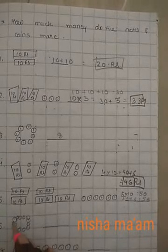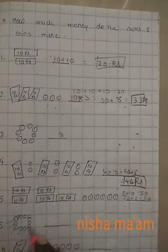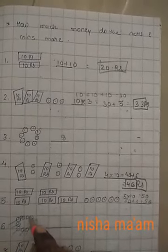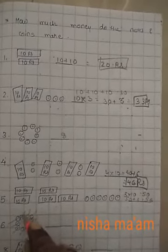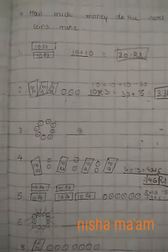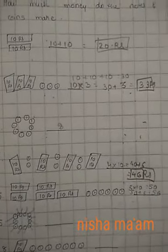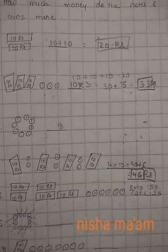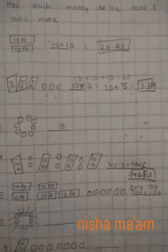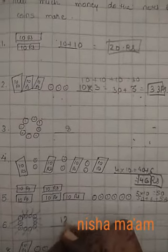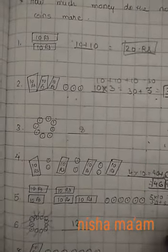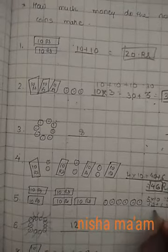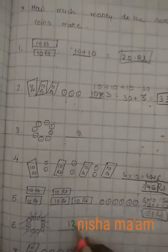1, 2, 3, 4, 5, 6, 7, 8, 9, 10, 11, 12. In this example there are no notes, but we could also get one 10 rupee note instead. How many coins do we have? 12 coins, right? So that's 12 rupees.